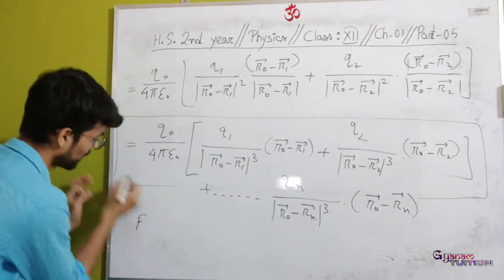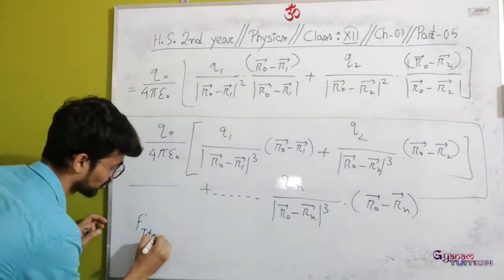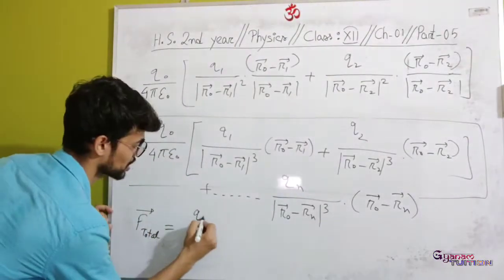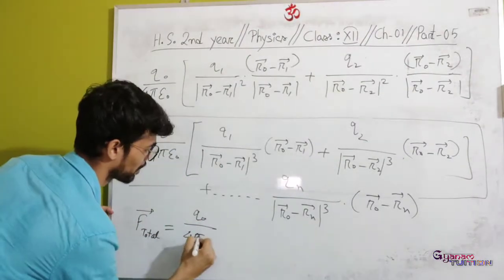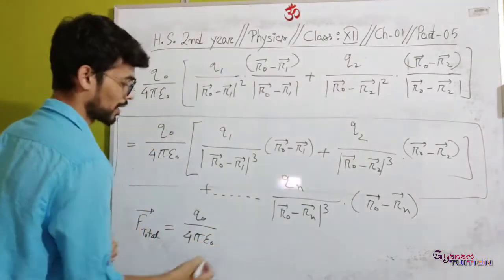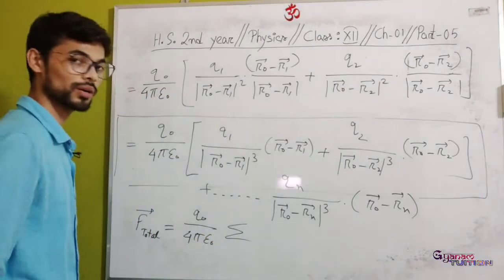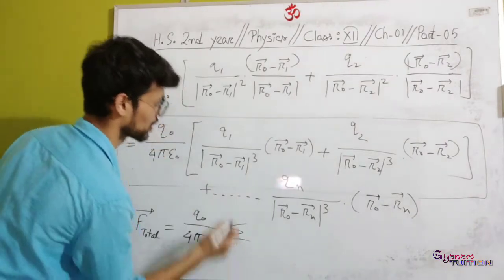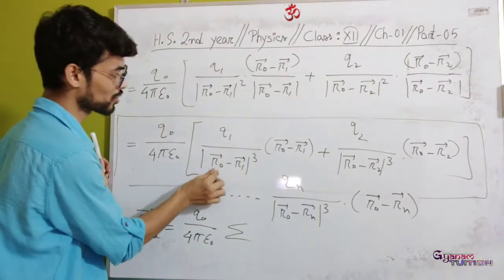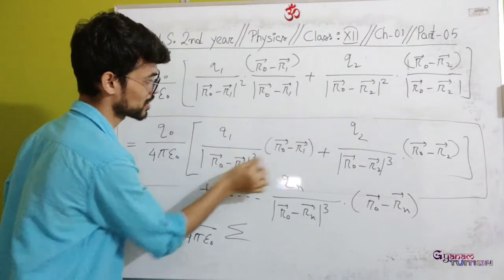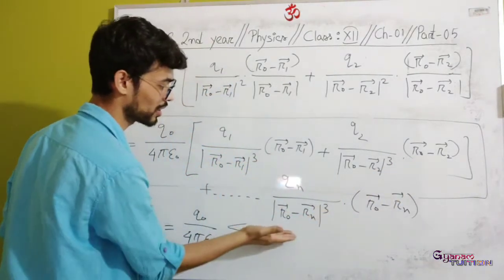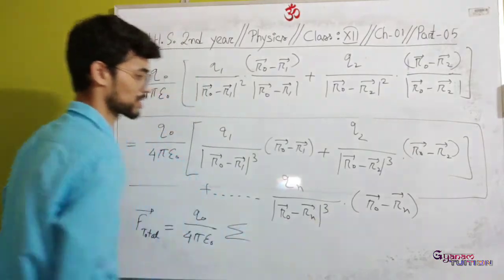Because on the left side we have total force — F total vector. Then I will write the constant Q0 divided by 4 pi epsilon, which is common. This is the summation. R0 is the same in every term. So I will write the n-number term.